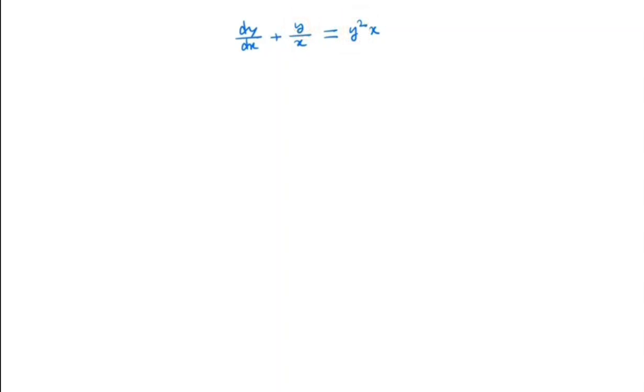So we solve this kind of equation by dividing both sides by this y² term. By doing that we have y^(-2) dy/dx + 1/y · 1/x equal to x.